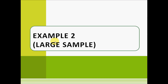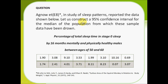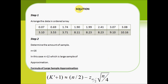Now we go to example number 2, which is a large sample example. This question asks us to construct a 95% confidence interval for the median of the population from which this sample data has been drawn. The data is about the percentage of total sleep time in stage 0 sleep by 60-month mentally and physically healthy males between ages 50 and 60. Step 1: arrange the data in ascending order. Step 2: the number of samples is n equals 16. Since n is greater than 12, this is a large sample approximation.